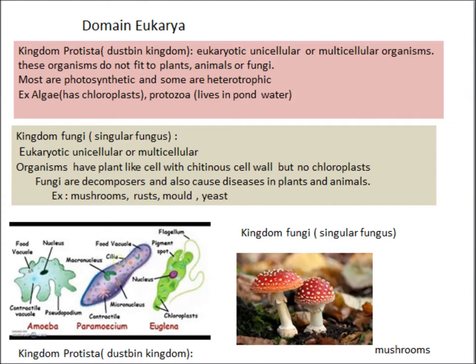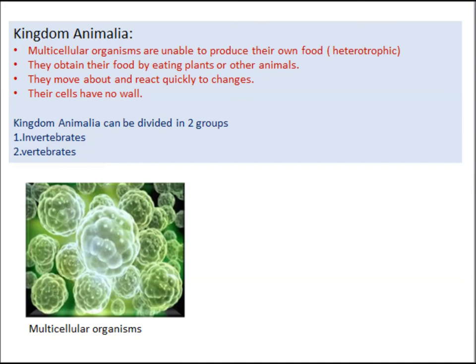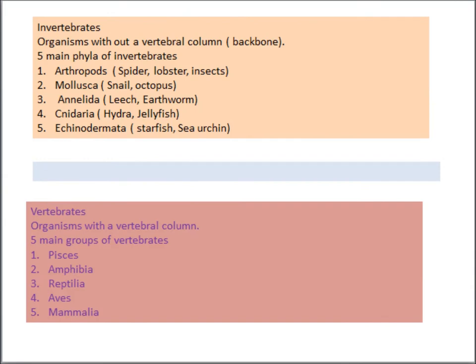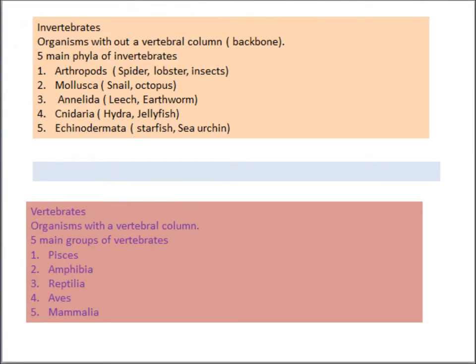Kingdom Animalia organisms are multicellular and unable to produce their own food, so they are called heterotrophic. Kingdom Animalia can be divided into two groups according to the presence or absence of the vertebral column. Organisms without a vertebral column are known as invertebrates, and organisms with a vertebral column are known as vertebrates.